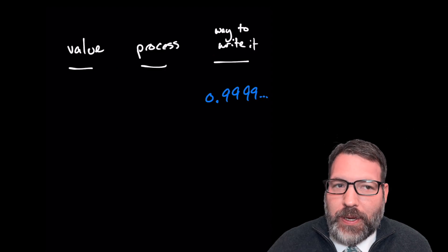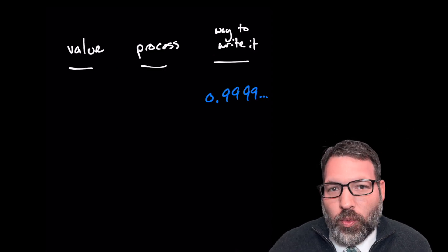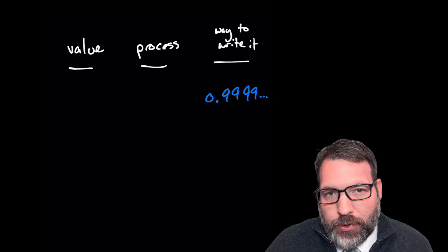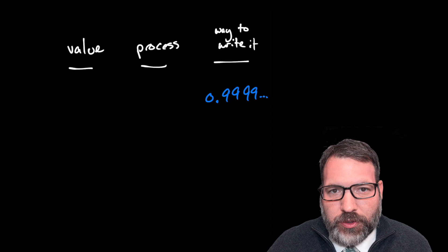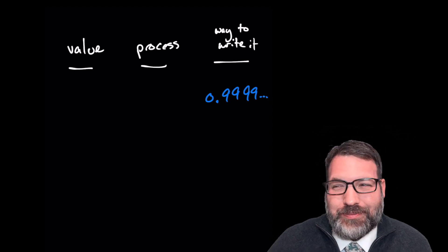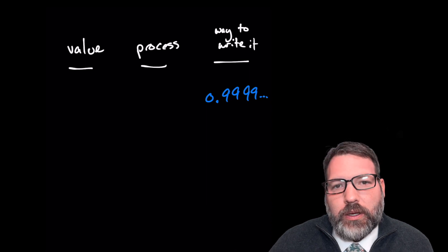With 0.9 repeating, we only really have the last thing — the way that we're writing it down. The value is precisely what we're trying to figure out, and the process — it's not really clear what kind of process would generate 0.9 repeating.